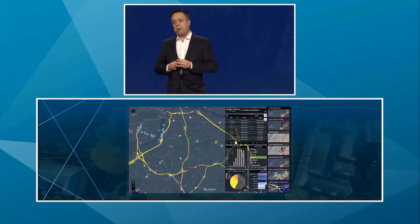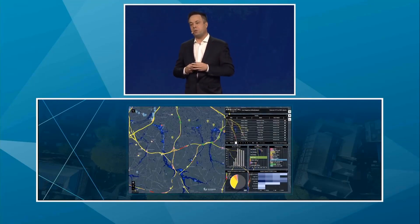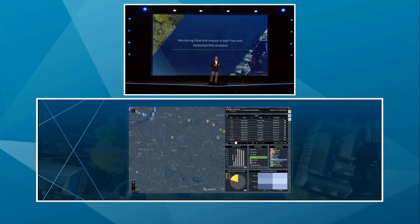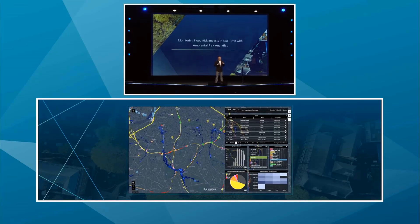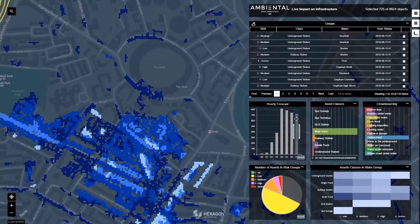Using the Smart Map platform, our partner in the UK, Ambiental, built a real-time monitoring solution that forecasts flood risk based on various input content layers, such as elevation, land cover, green space, and so forth. This solution fuses all that multi-source content with advanced algorithms to identify areas of highest flood risk and impact.